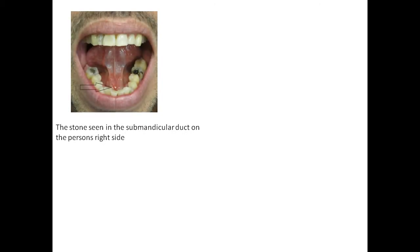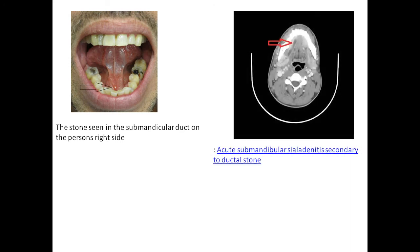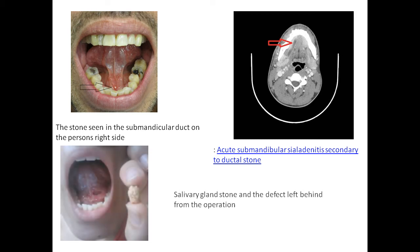Here we see a submandibular salivary duct stone at the opening on the right side. Acute submandibular silo-lithiotripsy — it is secondary to a ductile stone. This is the salivary gland stone that was extracted and the defect left behind after extraction.